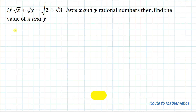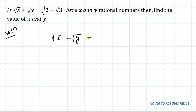Hello everyone, welcome to Root to Mathematics. In this video we are going to solve this interesting problem. We have given: if √x + √y = √(2 + √3), and x and y are rational numbers, then find the value of x and y. We have an equation with variables in radicals and we are asked to find the value of x and y. Let's start the solution.